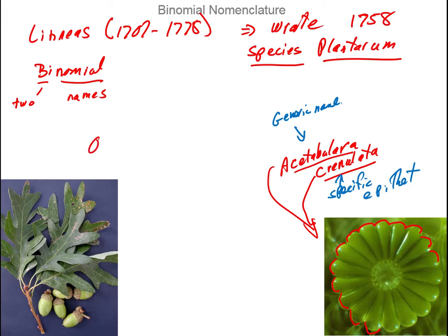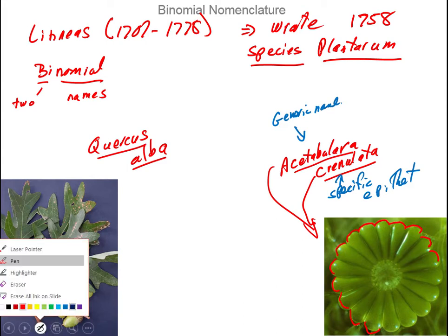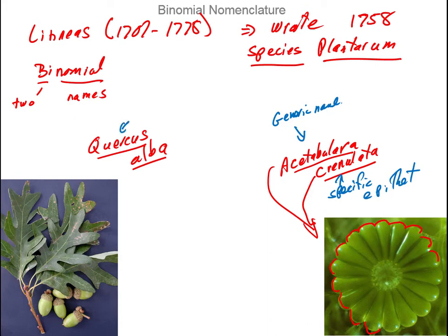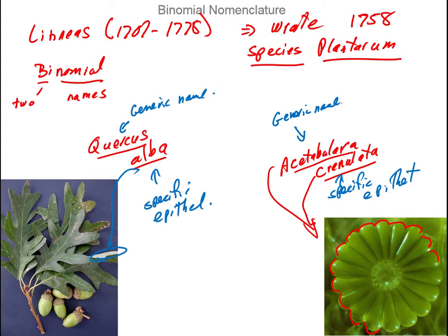Our oak is Quercus alba. 'Alba' means white, and we can see that on the slide — if you look at the back of the leaf, it's white because it has hairs on it. So Quercus is the generic name and alba is the specific epithet. Which Quercus? The white one — the one with white leaves on the back.